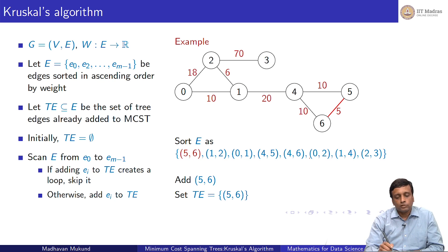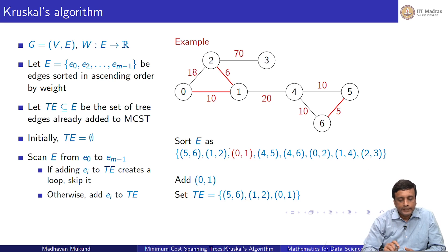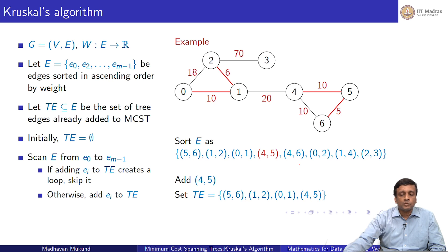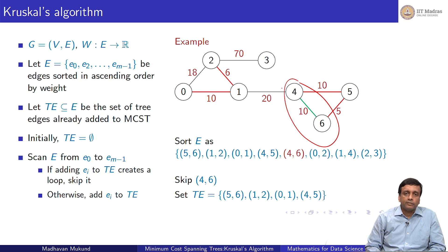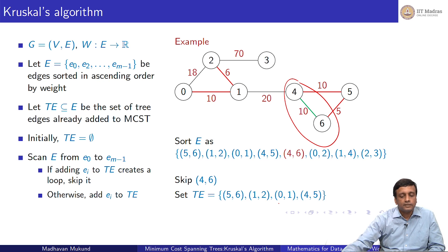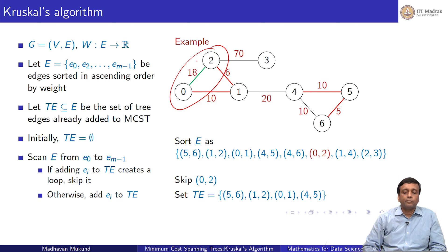I look at the next edge: 1–2. It connects two different components, so I add it. Then 0–1 also connects two different components, so I add it. Now I come to the weight-10 block. Edge 4–5 connects two different things — vertex 4 was isolated, and 5–6 were one component — so I add it. Then edge 4–6 lies within a component, so I cannot use it and I skip it. Edge 0–2 also connects two vertices already in the same component, so I skip that too.